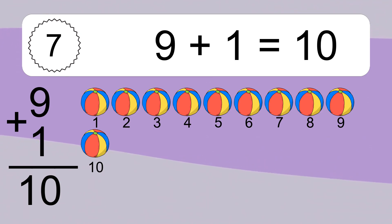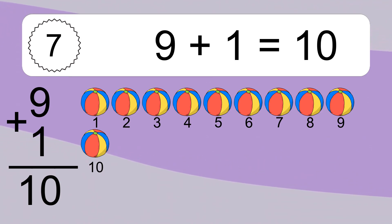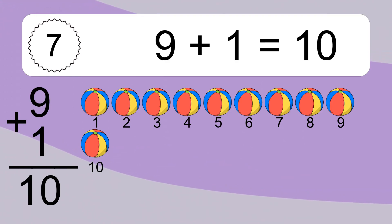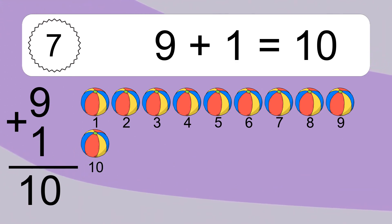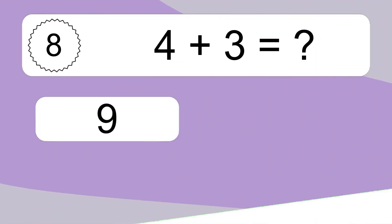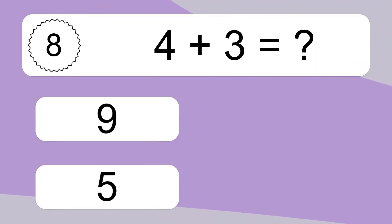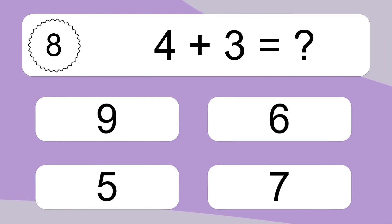1, 2, 3, 4, 5, 6, 7, 8, 9, 10. 4 plus 3 equals what?